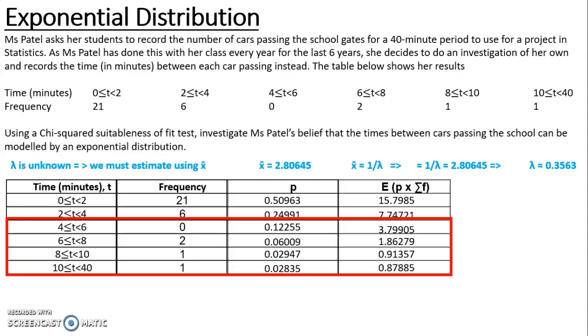So I can combine the 4 to 6, 6 to 8, 8 to 10, and 10 to 40 to make a 4 to 40 group. To get the frequency I add up those four frequencies: 0, 2, 1, and 1, that gives me 4. I can then work out my probabilities and times that by 31 to get a new e value which is now greater than 7, and therefore all my e values can be used in my goodness of fit test.